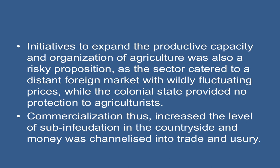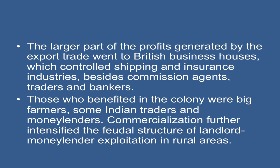Commercialization thus increased the level of sub-infeudation in the countryside, and money was channelled into trade and usury. The larger part of the profits generated by the export trade went to British houses which controlled business like shipping and insurance. Besides commission agents, traders, and bankers, those who benefited in the colony were big farmers, some Indian traders, and moneylenders. Commercialization further intensified the feudal structure of landlord-moneylender exploitation in rural areas.